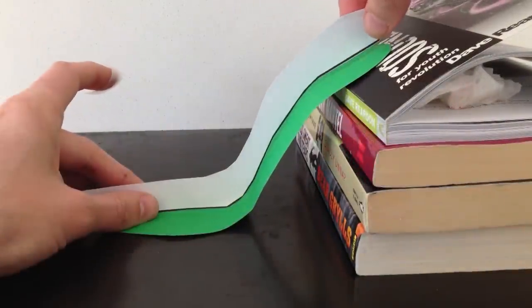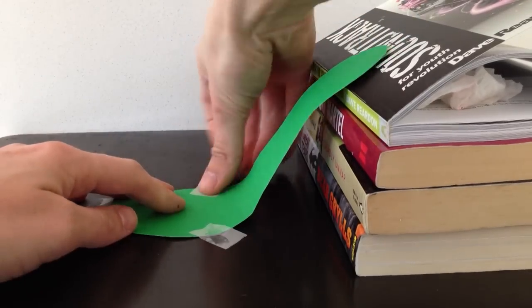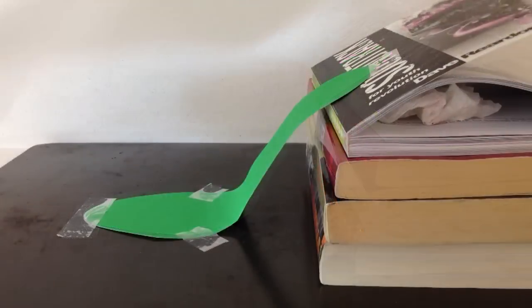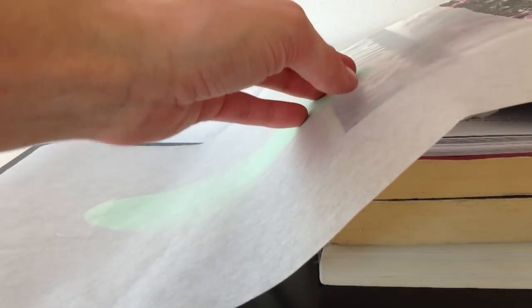Then take the cardboard sole and bend it to match the side profile of the shoe and set it up on the books and tape it into place. Take some non-stick baking paper and place that over the top so that the fondant doesn't stick to the template.